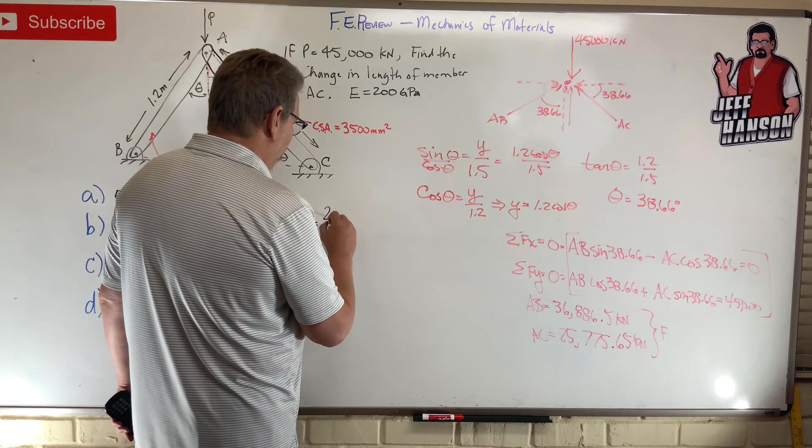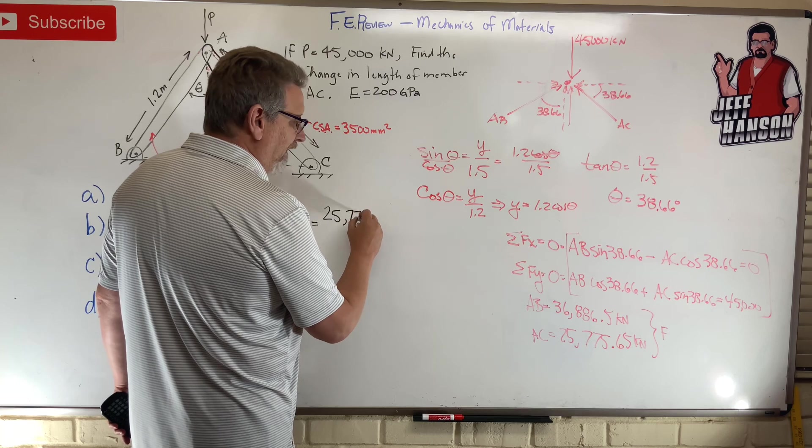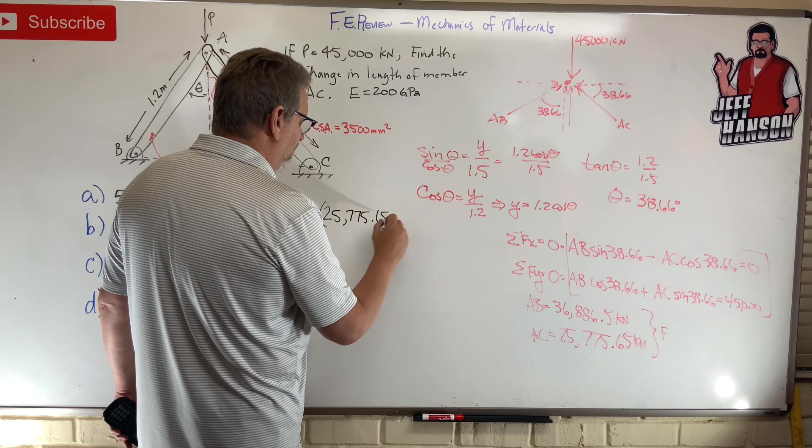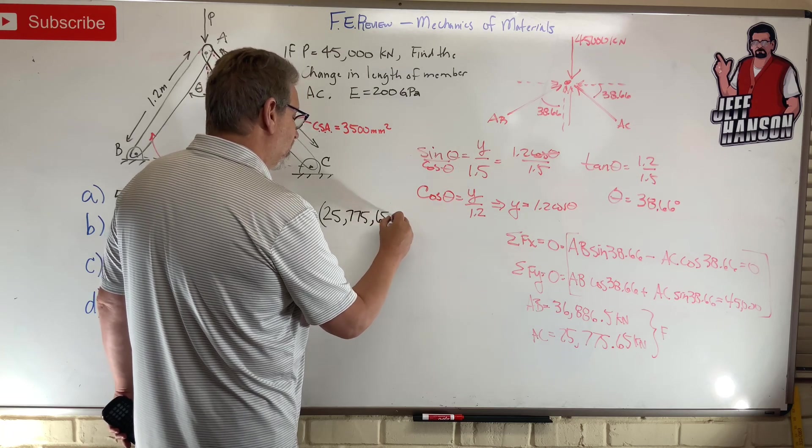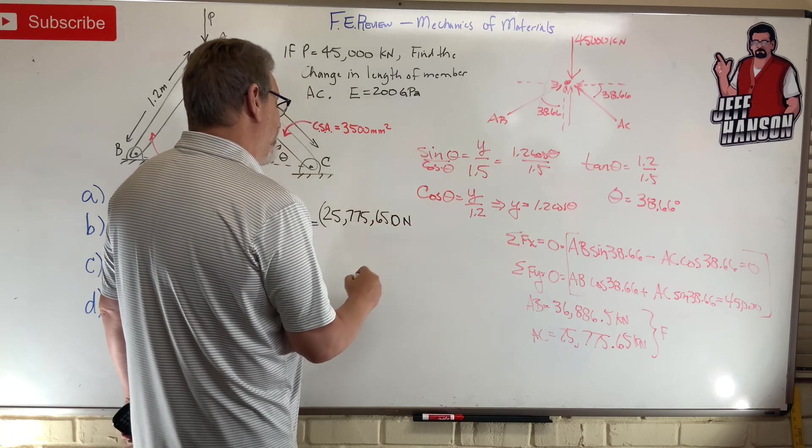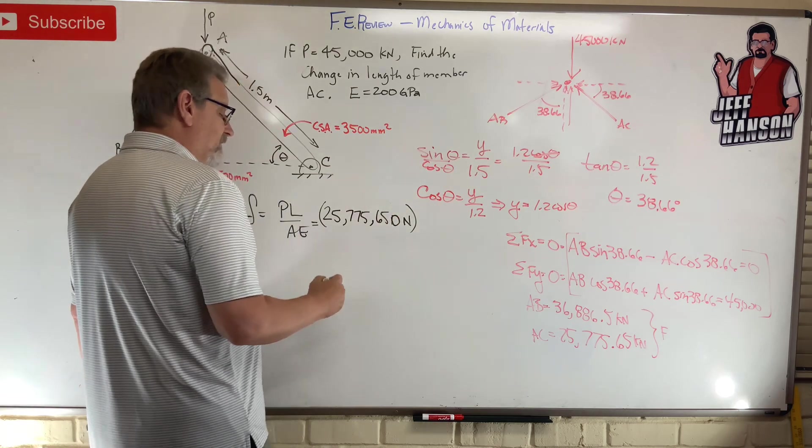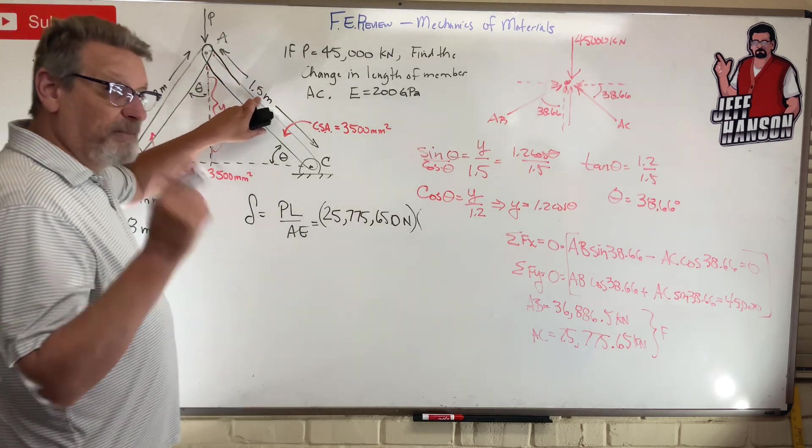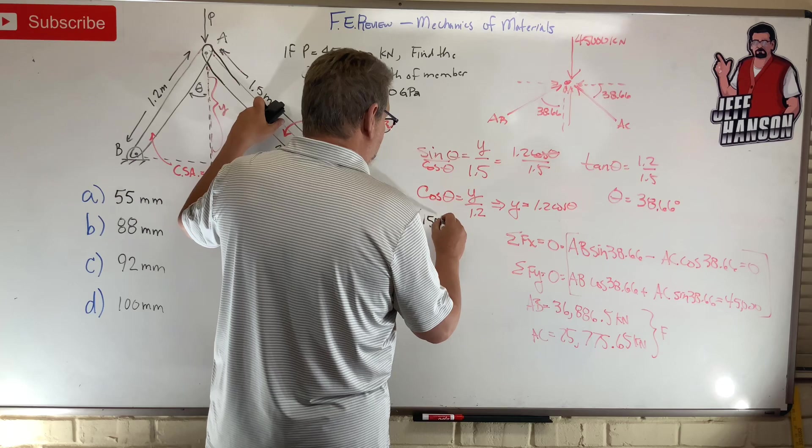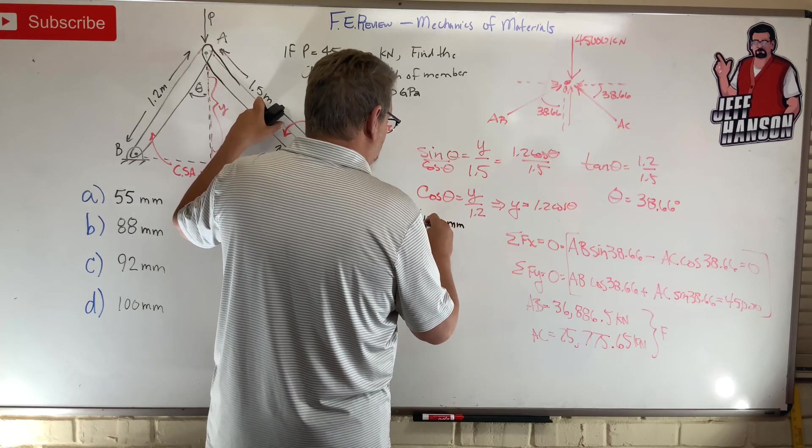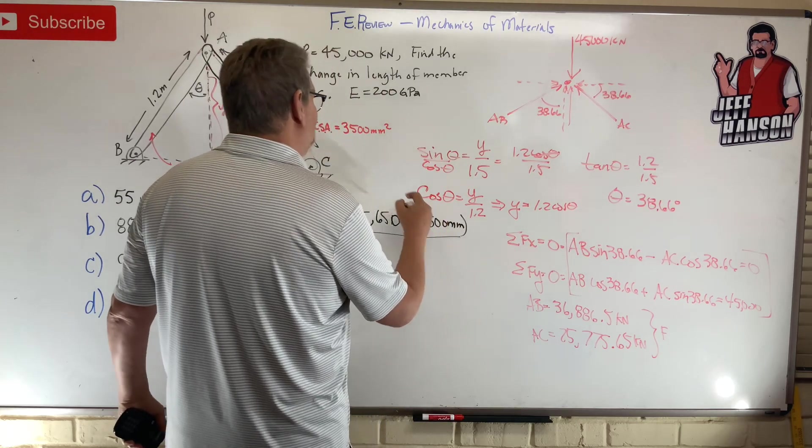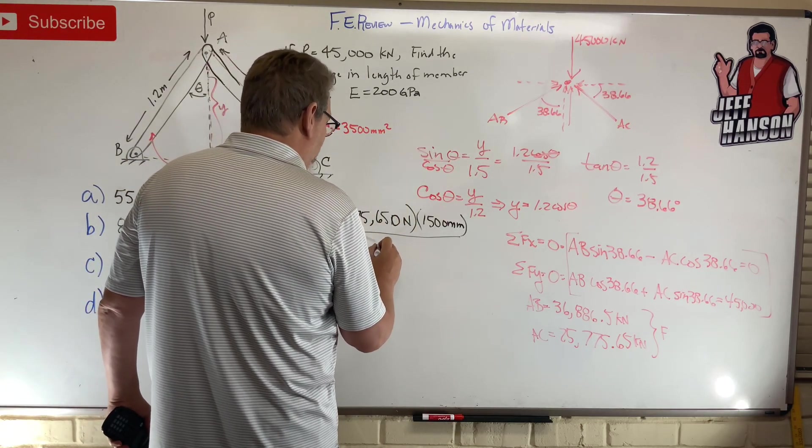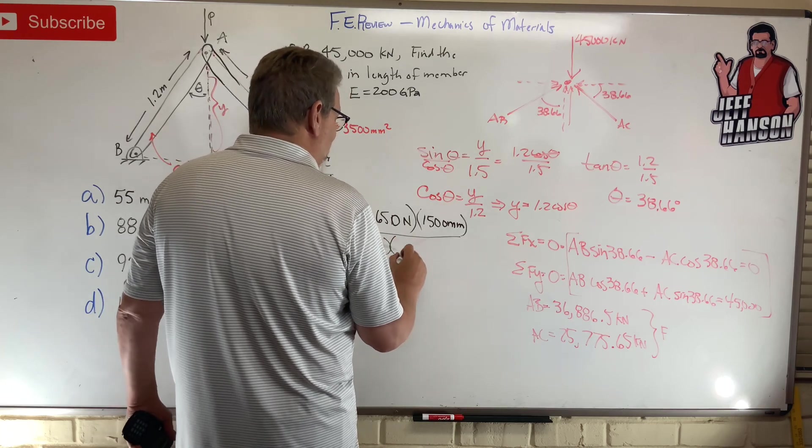Okay, so here we go. Equals P, so we're interested in AC, 25,775.65. And that's in kilonewtons. Now, let's just do this. Now it's in newtons. Boom, I put three more zeros on it. Times L. What's L? 1.5 meters. I'm going to put it in millimeters, so let's put 1500 millimeters. Divide it by A, given in millimeters, 3500 millimeters squared times E.